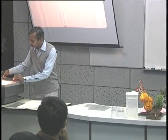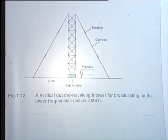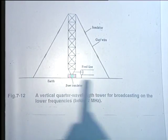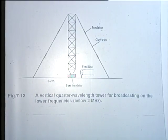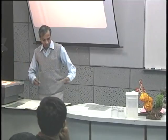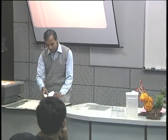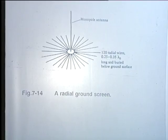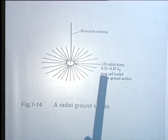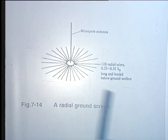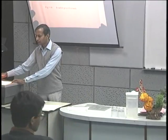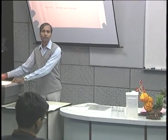For the case of broadcast antennas, where efficiency is very important and if the earth beneath the antenna does not have sufficiently high conductivity, one can take a remedial step by creating an artificial ground screen — putting radial wires just beneath the antenna. If they have a size of 0.25 to 0.35 wavelengths, they effectively act as a ground plane. These are some practical measures taken in the use of monopole antennas.